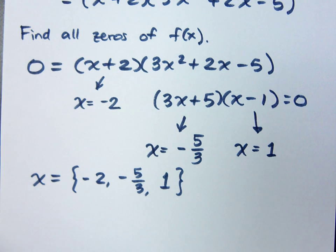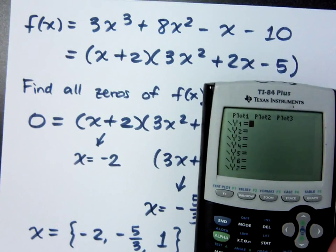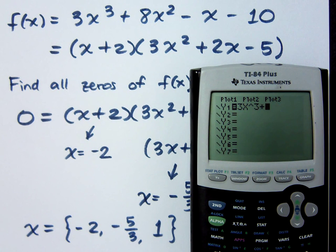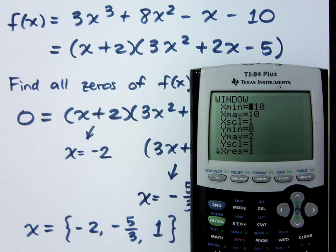That means if I were to take my graphing calculator, so my original function was this: 3x to the 3rd plus 8x squared minus x minus 10. How many times do you think this will cross the x-axis? Three. Three because all of these are real numbers, right?